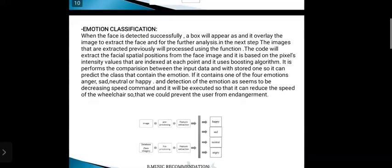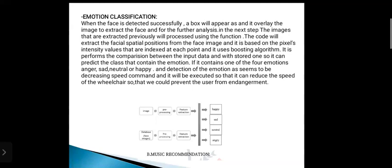The next one is emotion classification. When the face is detected successfully, a box will appear and overlay the image to extract the face for further analysis. In the next step, the extracted images will be processed using a function. The code will extract the facial spatial position for the face image, based on the pixel intensity values indexed at each point. It uses a boosting algorithm that performs comparison between the input data and the stored one.